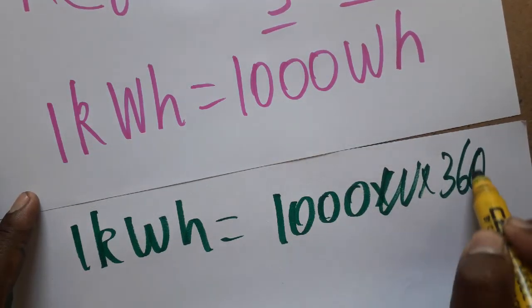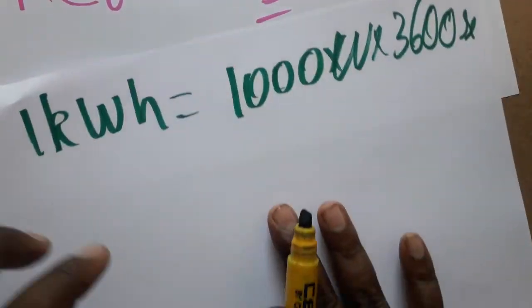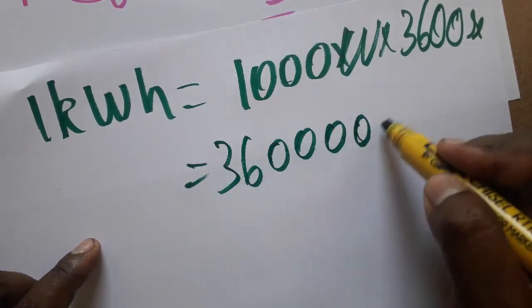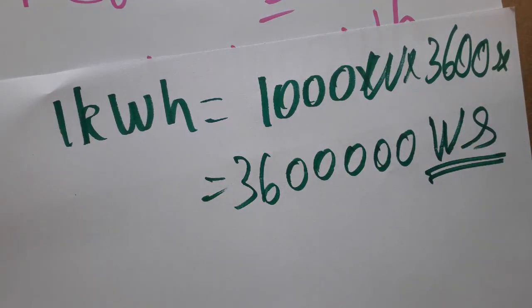1000 watts into 3600 seconds. This multiplication gives the answer of 3,600,000 - totally five zeros - watt-seconds. And watt-second, we know, is joules.